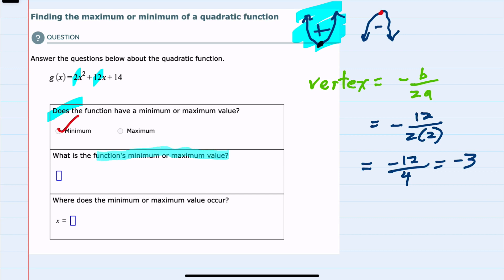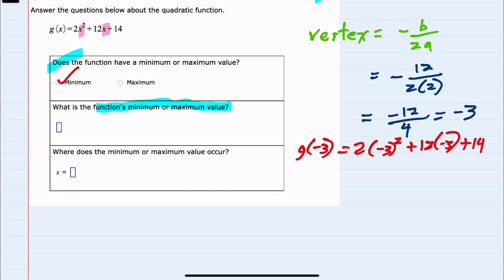To find the function's value, we'll need to plug this back in to g(x). So we'll be looking for g(−3). Here we are replacing the x's with negative 3. So we would have 2 times (−3)² plus 12 times (−3) plus 14.